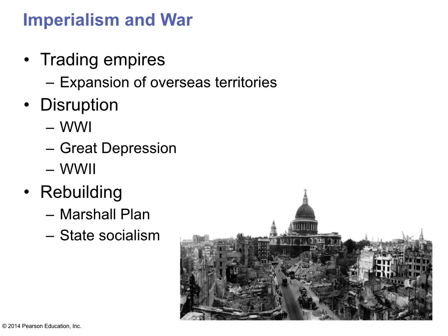There was also a period of imperialism where empires began to spread across the oceans. Some disruption came with the world wars — World War I, the Great Depression in the 1930s, and World War II. Then came the rebuilding after the war, including the Marshall Plan the United States used to help rebuild Germany after World War II. Unfortunately, Europeans and Russians began to experiment with socialism and state socialism, which caused more economic problems.